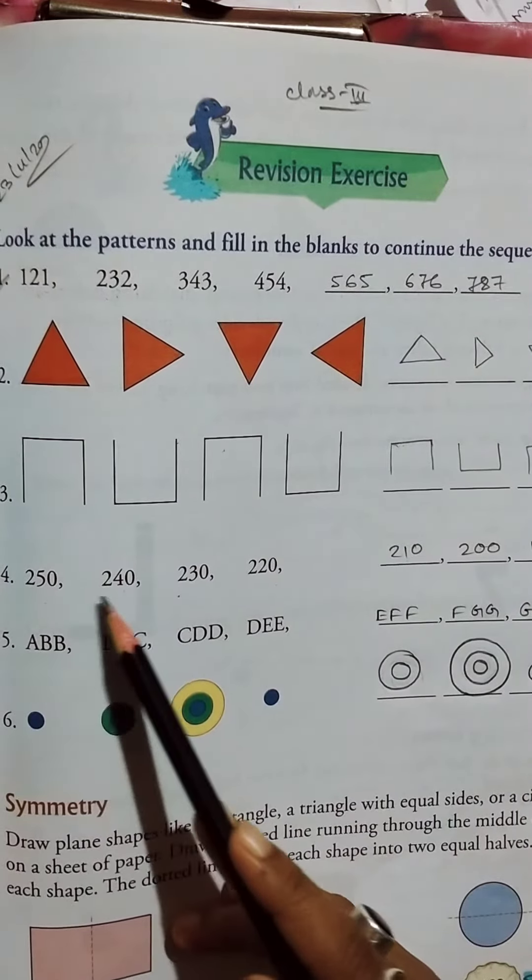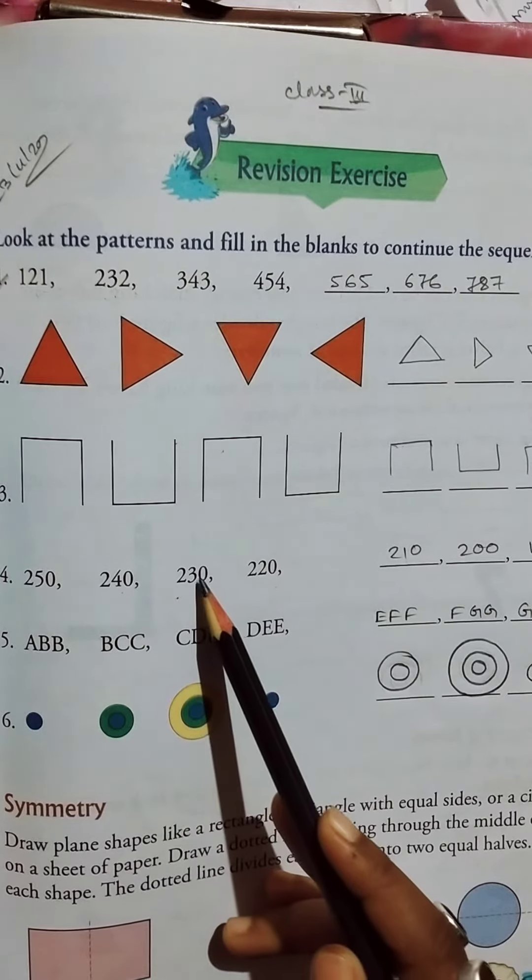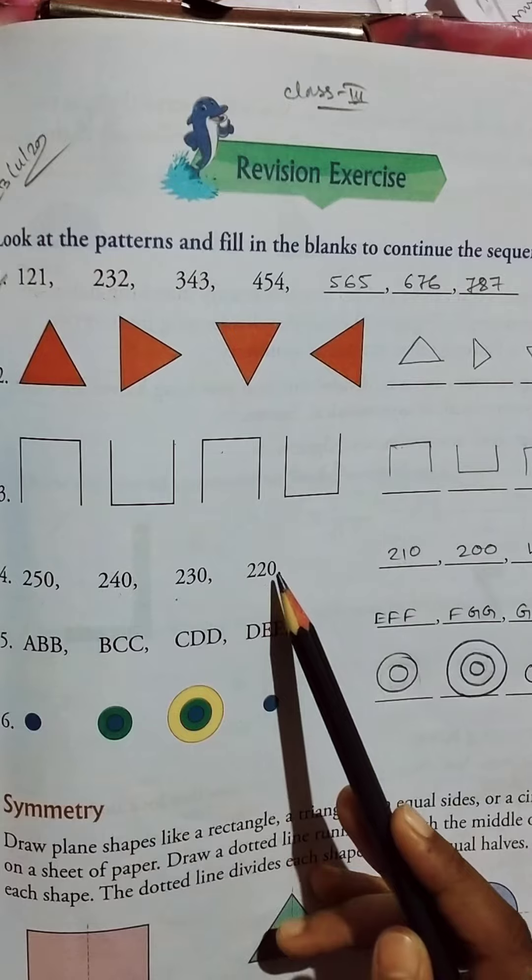250 minus 10 equals 240, 240 minus 10 equals 230, 230 minus 10 equals 220, 220 minus 10 equals 210.